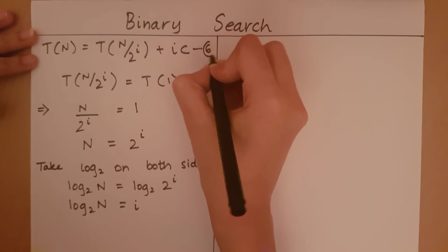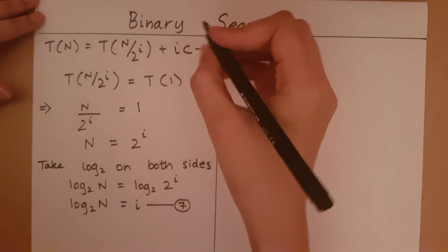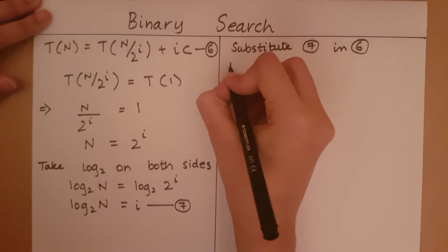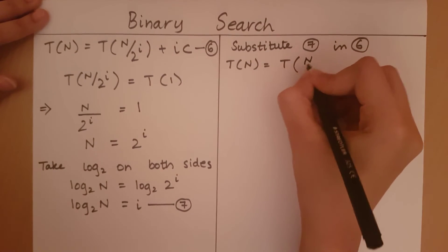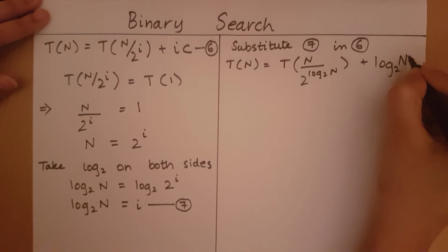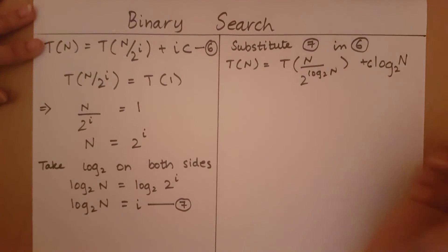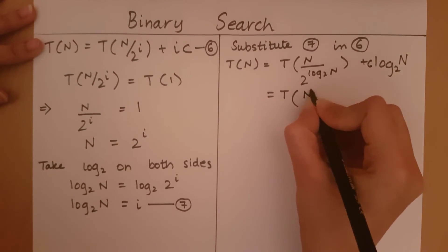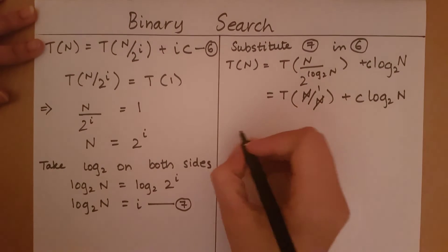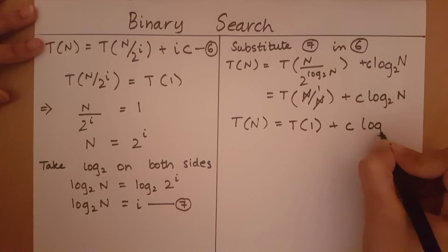Calling the general pattern equation number 6 and i = log₂(n) equation number 7, we substitute 7 into 6. We get T(n) = T(n / 2^(log₂n)) + log₂(n) · c. Since 2^(log₂n) = n, the term becomes T(n/n) = T(1). So finally, T(n) = T(1) + c · log₂(n).